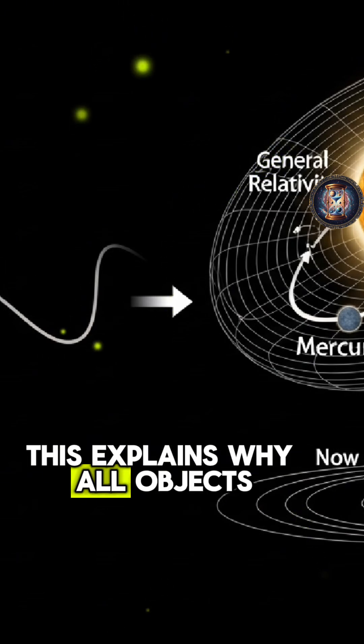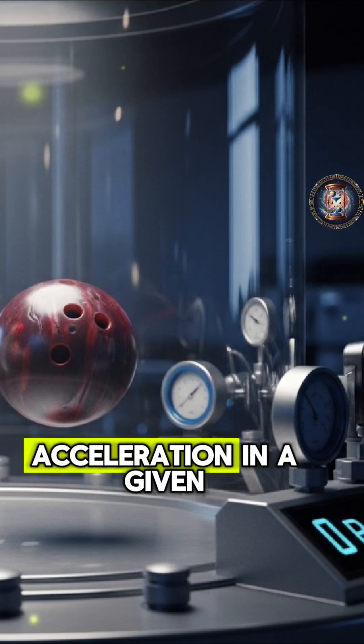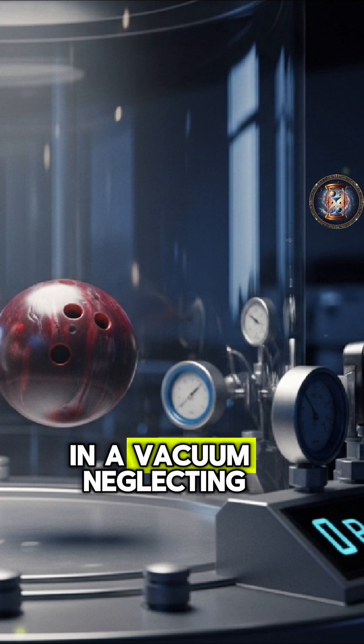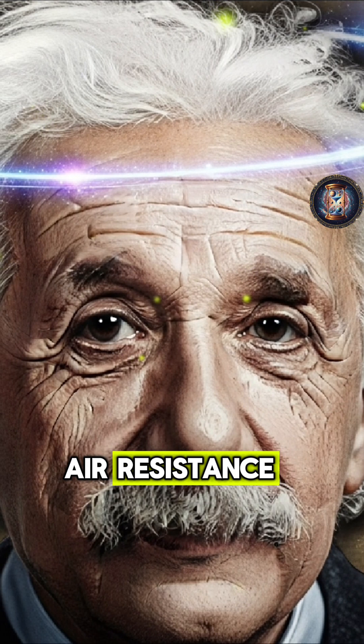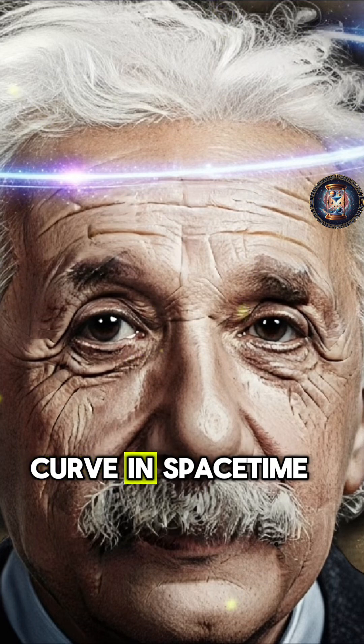This explains why all objects, regardless of their mass, fall with the same acceleration in a given gravitational field in a vacuum, neglecting air resistance. This is because they all follow the same curve in spacetime.